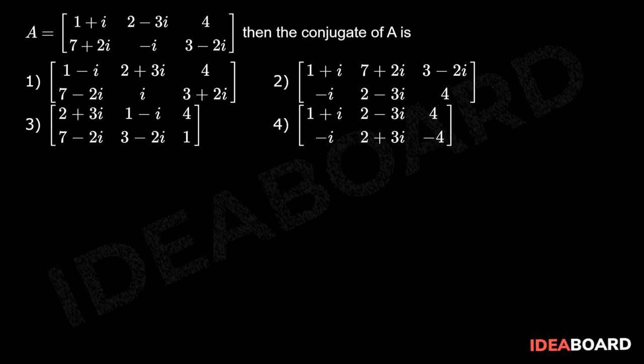A is equal to a 2 by 3 matrix. First row: 1 plus i, 2 minus 3i, 4. Second row: 7 plus 2i, minus i, 3 minus 2i.